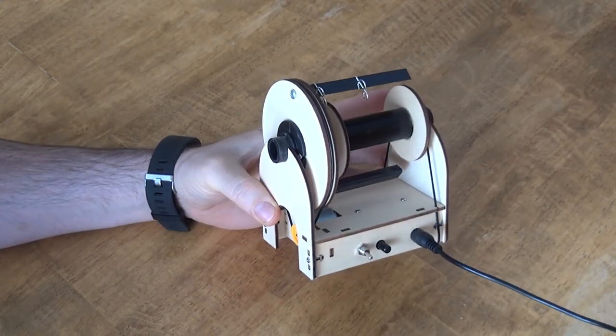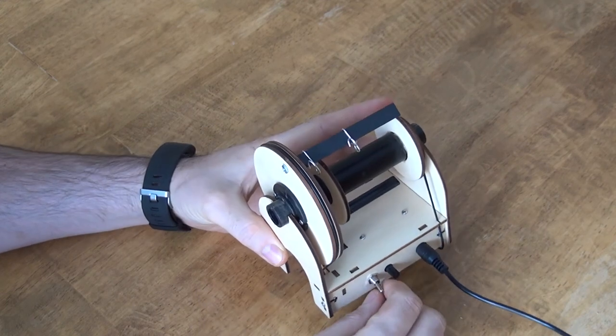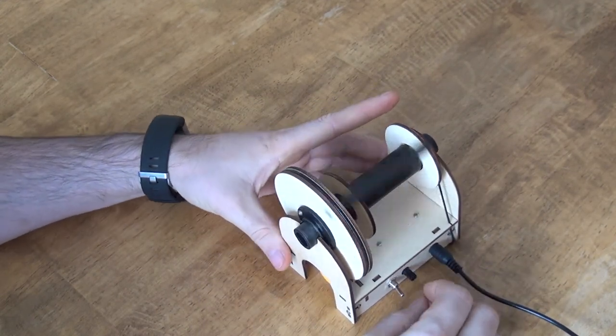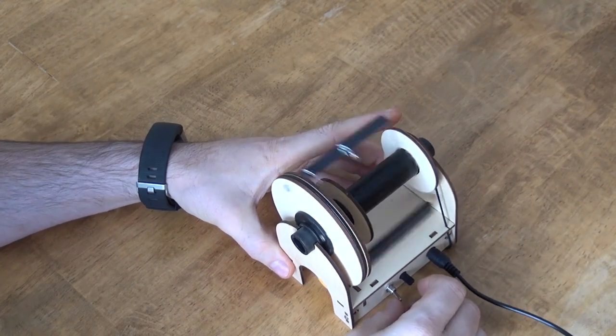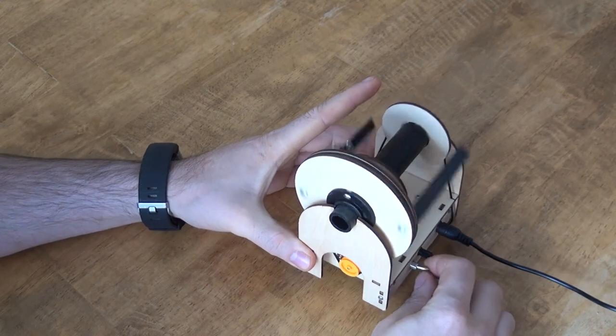So the first one is going to be this switch that actually reverses the direction of the flyer. So we've got the flyer going in one direction, if I flip the switch it switches directions. So that's pretty nice.